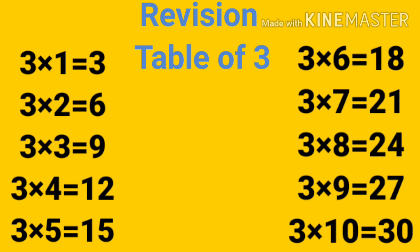Let's revise it again: 3 ones are 3, 3 twos are 6, 3 threes are 9, 3 fours are 12, 3 fives are 15, 3 sixes are 18, 3 sevens are 21, 3 eights are 24, 3 nines are 27, and 3 tens are 30. I hope you all have revised it with me very well.